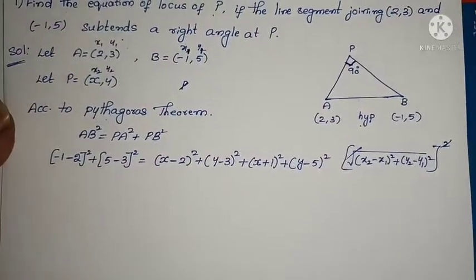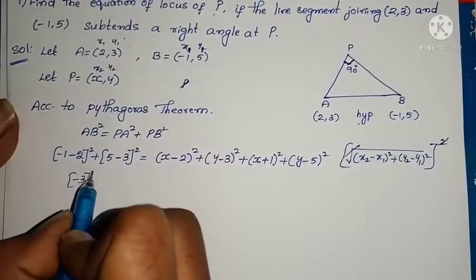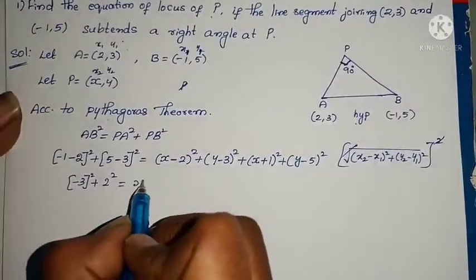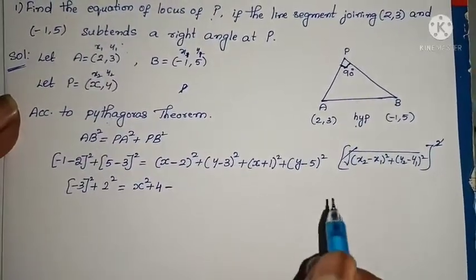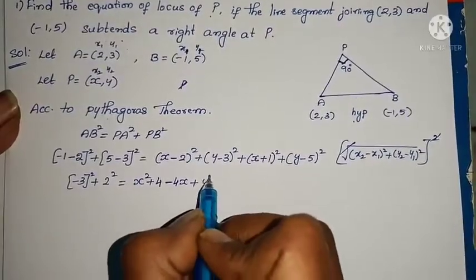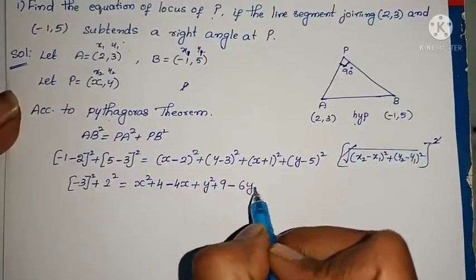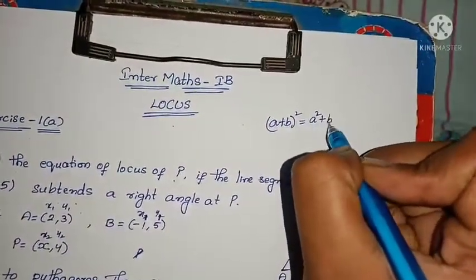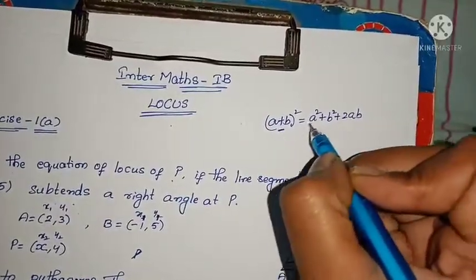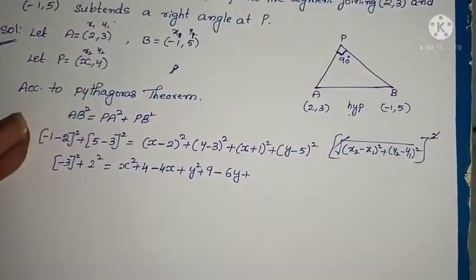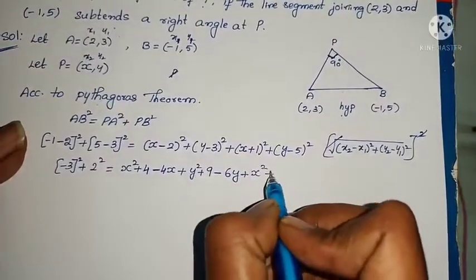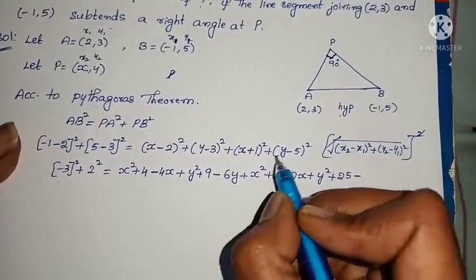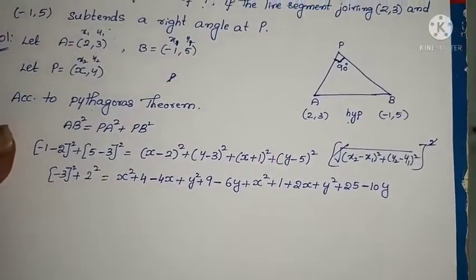Applying the distance formula and expanding: (a - b)² = a² + b² - 2ab. For terms with the same sign, add; for different signs, subtract. So we get x² - 2x and y² - 6y terms from one side, and x² + 2x and y² + 10y from the other.